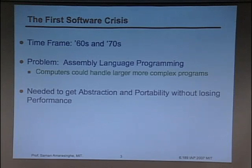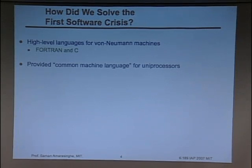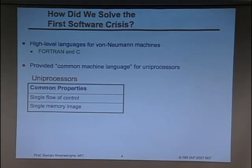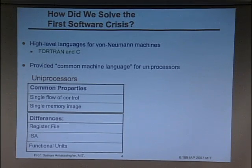Instead of writing all assembly hacking and dealing with every hardware feature, you could abstract above that. The way we solved it in that generation was we came up with high-level languages like Fortran and C. What those did was provide a common machine language across these machines — they abstracted out all the differences, keeping the common properties available to the programmer. That's how we avoided the first software crisis.